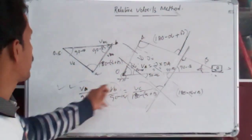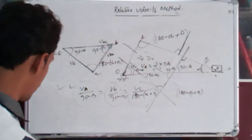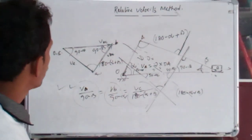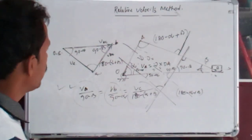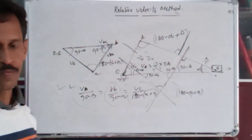So the relative velocities of different links can be found using this theory. Hope you have understood. Thank you.